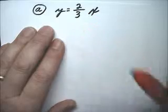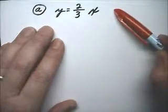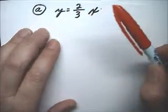For part a, y equals 2 thirds x. In any direct variation, b is 0. The constant of variation, 2 thirds, is the same thing as slope.